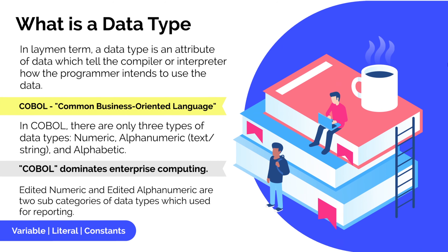Let's begin with the introduction. What is a data type? In layman's terms, a data type is an attribute of data which tells the compiler how the programmer intends to use the data. Data types are generally used to classify the data — whether it is a numeric value or a string value. In COBOL, you basically have three types of data type.